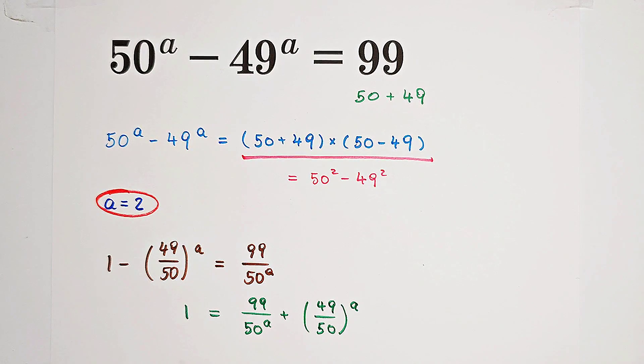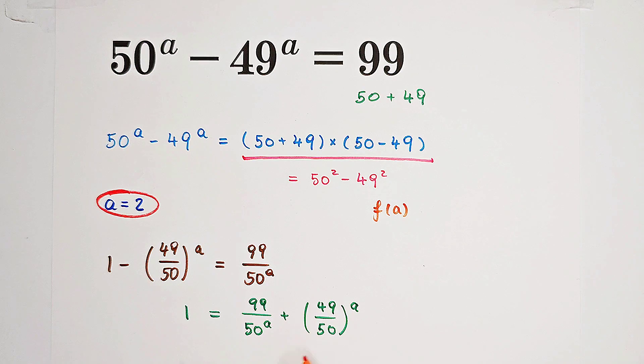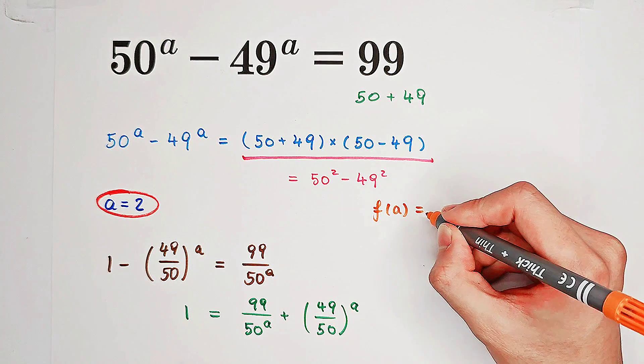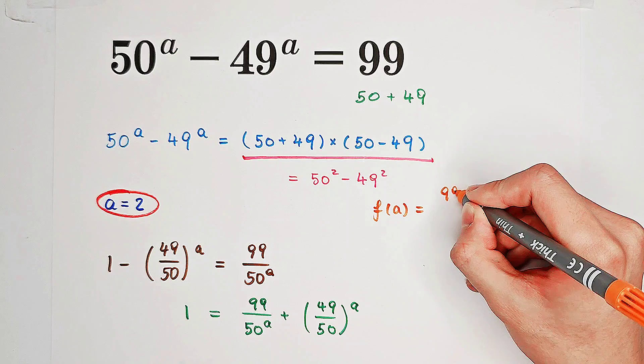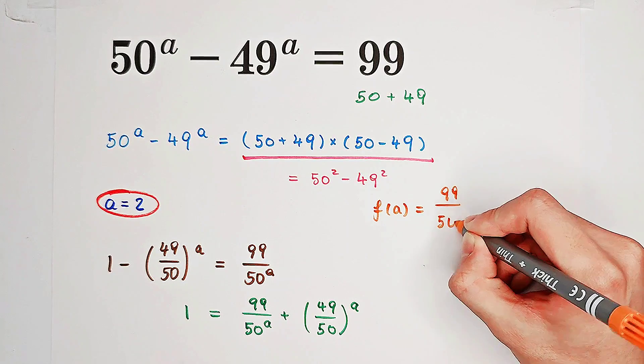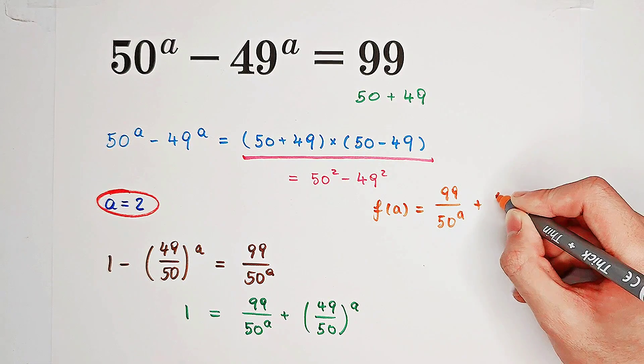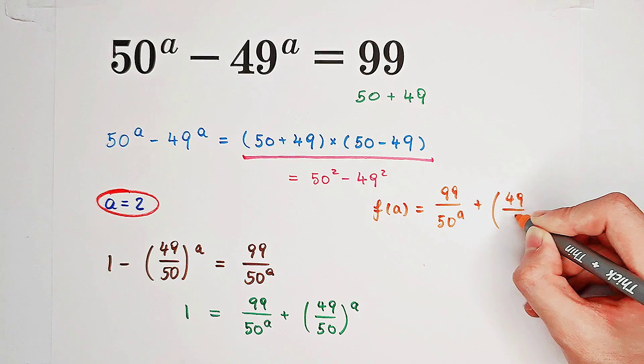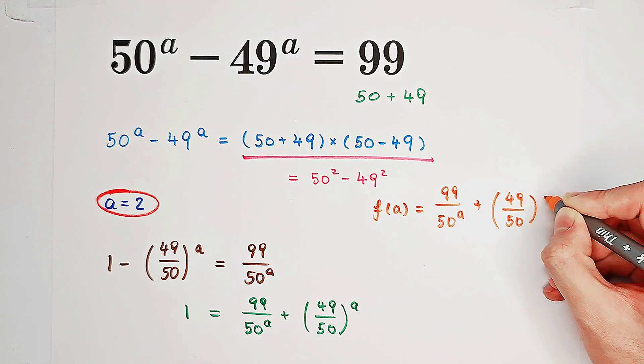So now, what I'm going to do is to let the right-hand side be a function of A. It is f of A equals 99 over 50 to the power of A plus 49 over 50 all to the power of A.